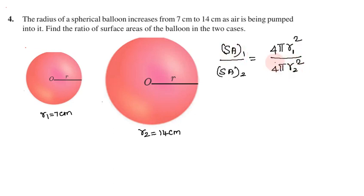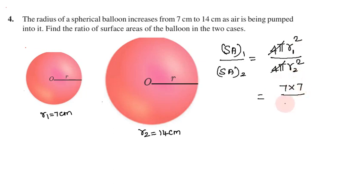The 4π cancels from numerator and denominator, leaving r1² over r2². Radius 1 is 7, so we get 7 squared. Radius 2 is 14, so we get 14 squared. That gives us 7 × 7 over 14 × 14.